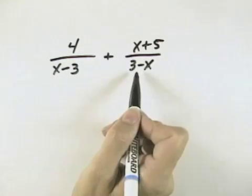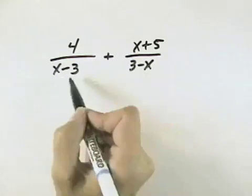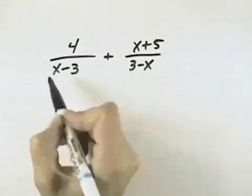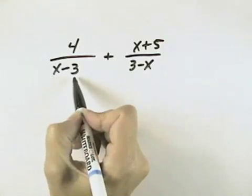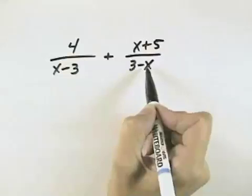These denominators look very similar, and so what we might notice is they are actually opposite. In other words, the x here is positive, the 3 is negative. Here the 3 is positive, the x is negative.